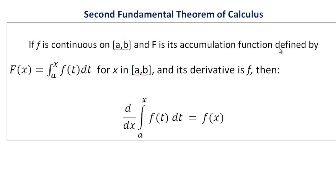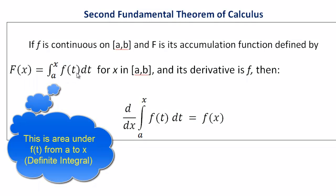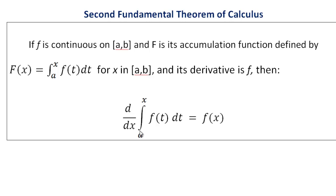The second fundamental theorem of calculus states that if a function little f is continuous on a to b, and capital F is its accumulation function — the accumulated area — defined by capital F of x equals the integral from a to x of f of t dt, where t is a dummy variable, then for all x's on the interval, the derivative of capital F of x is little f of x. In other words, the derivative with respect to x of the integral from a to x of f of t dt equals f of x.